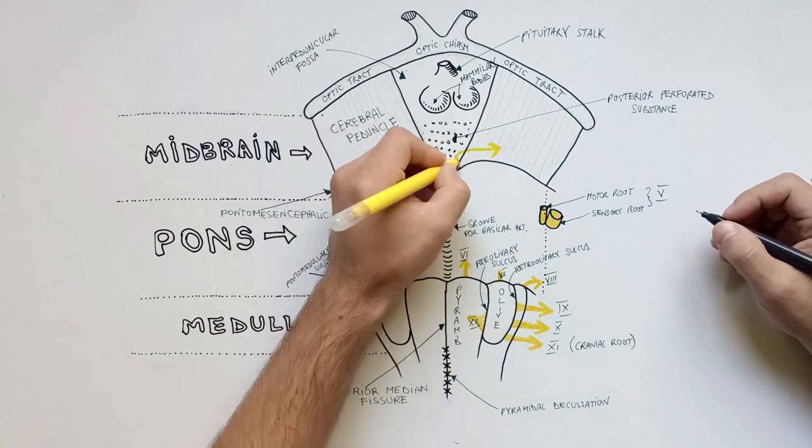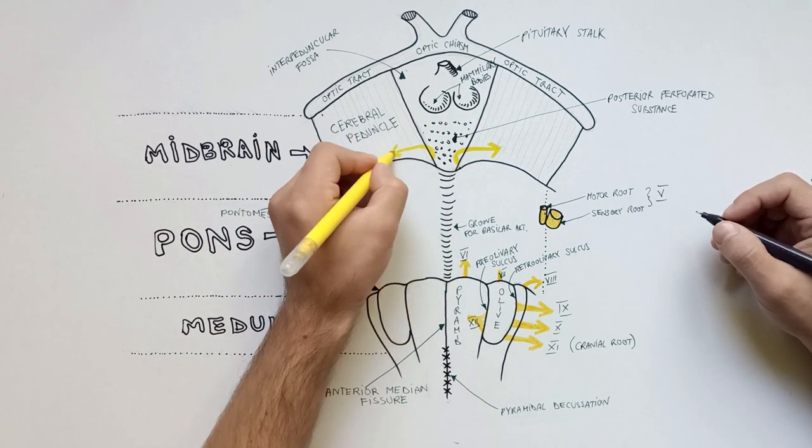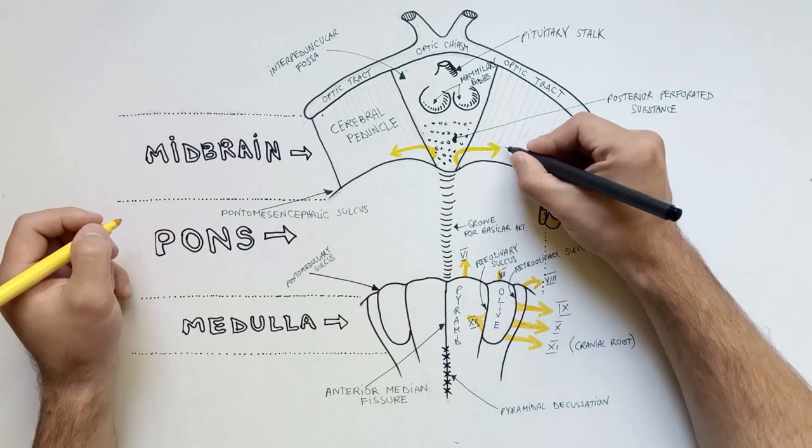The oculomotor nerve or the third cranial nerve is emerging at a groove on the lateral wall of the interpeduncular fossa.